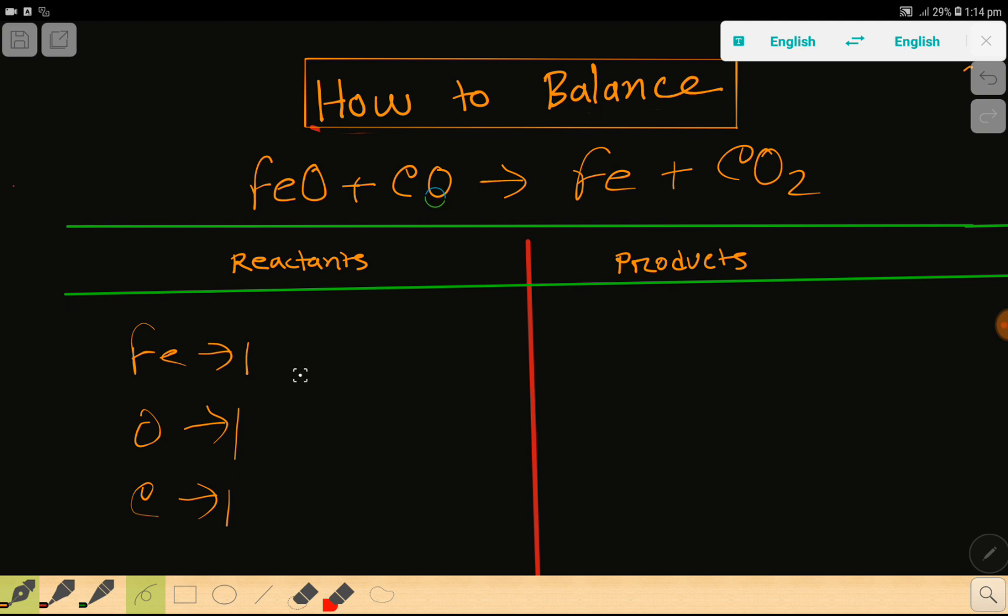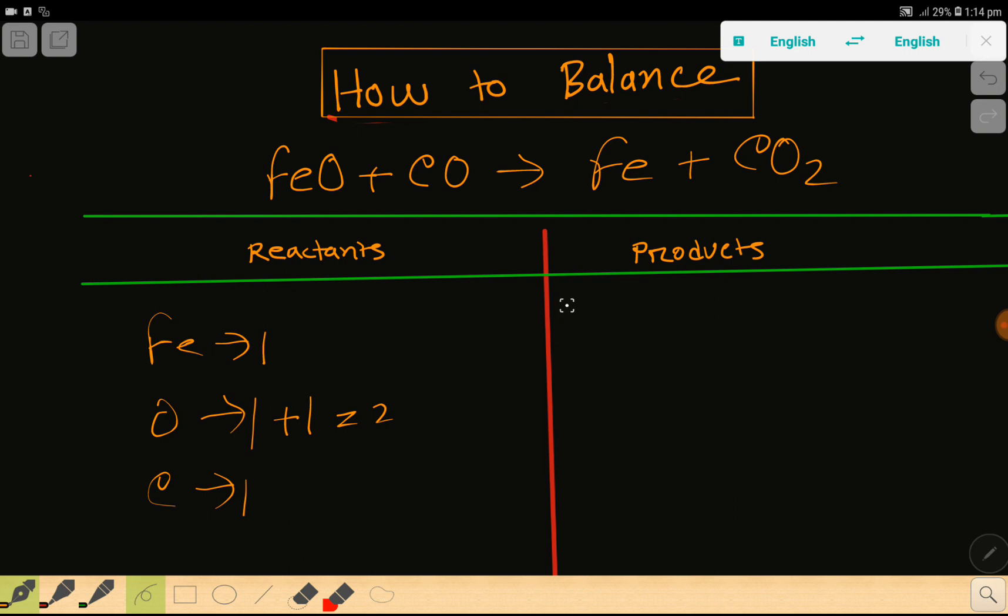In the right-hand side we have iron, that is one. Then here we have carbon, which is one, then we have two oxygen. So let me write here the two oxygen.